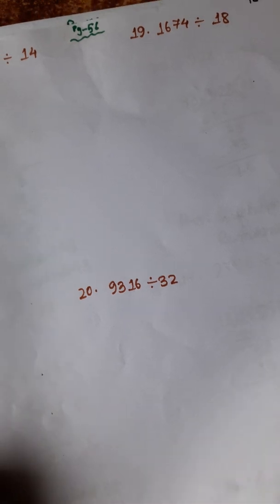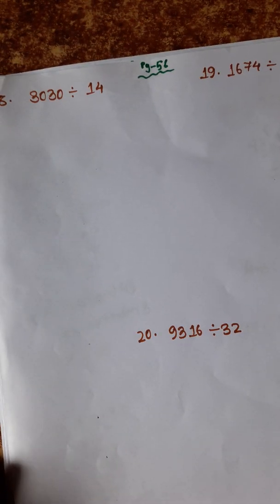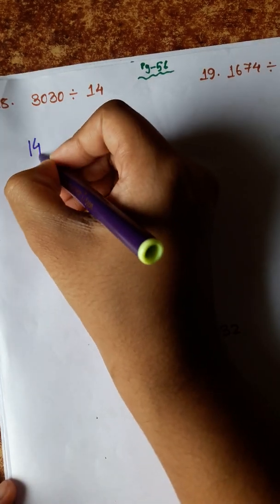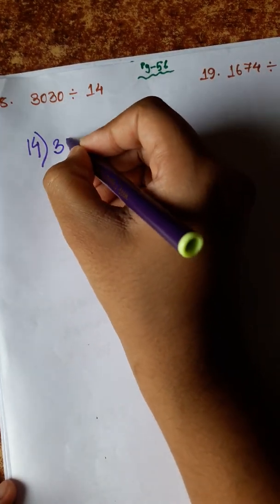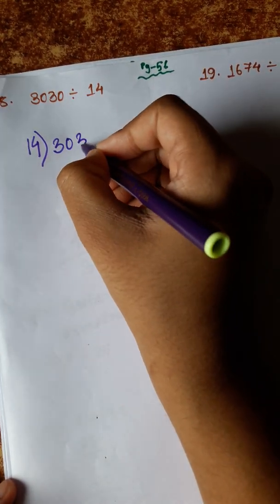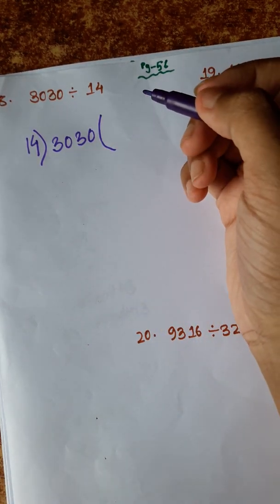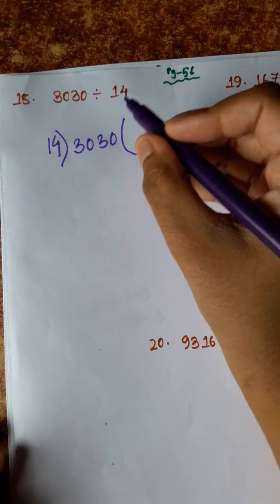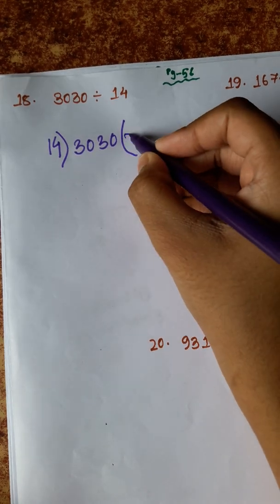Some of the first maths are 3030 divided by 14. 142028.